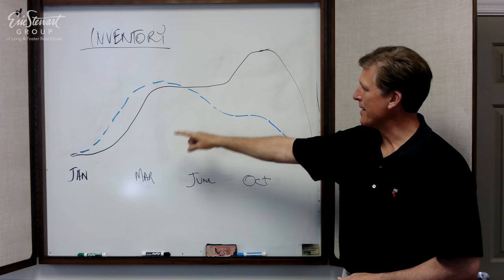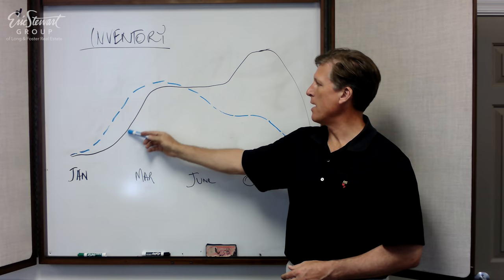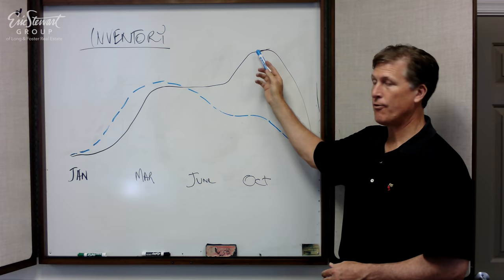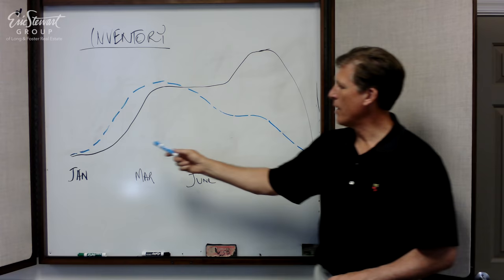So looking here at inventory, inventory is our black line here. What you can see is that the inventory starts here and creeps up into June. It flatlines in the summer and then it increases into the fall before it falls off into Hanukkah, Christmas, New Year and so on.